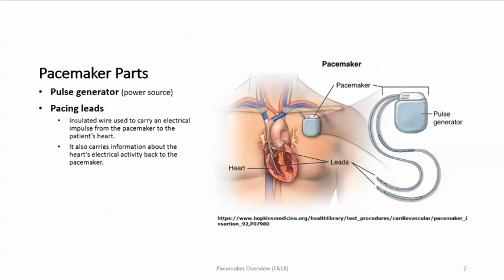Pacemaker parts. The pacemaker system consists of a pulse generator, which is the power source, and pacing leads. These are insulated wires used to carry an electrical impulse from the pacemaker to the patient's heart. The leads also carry information about the heart's electrical activity back to the pacemaker.